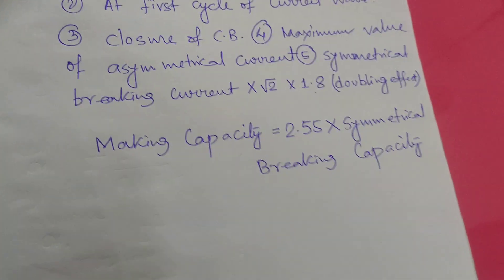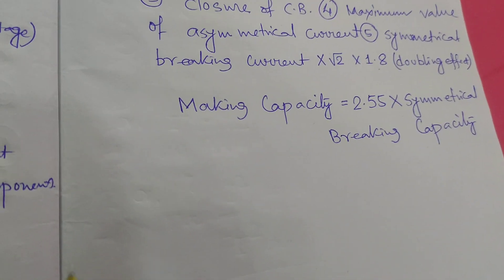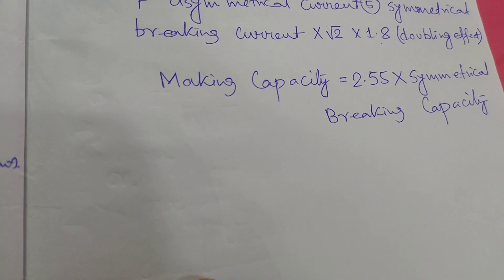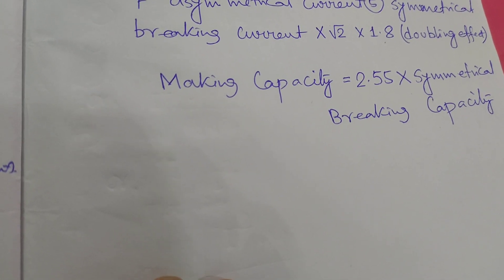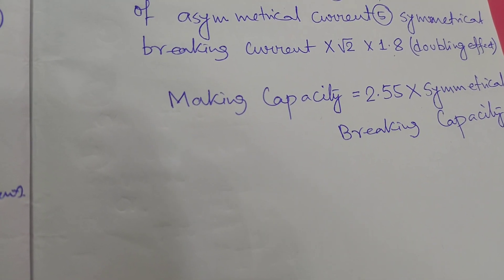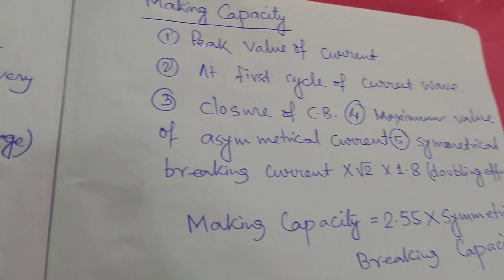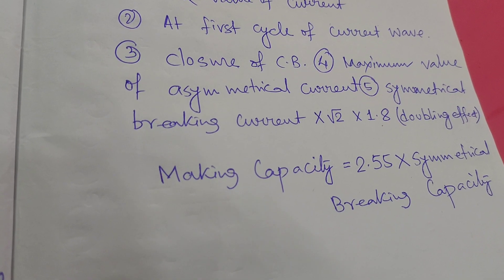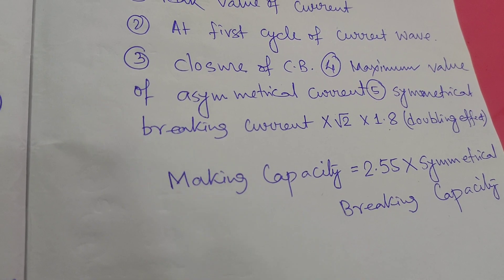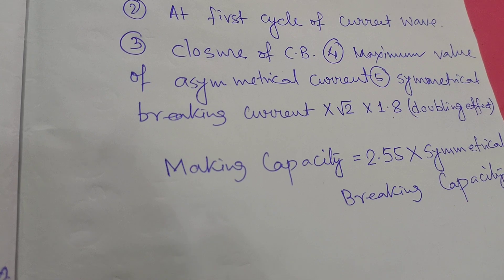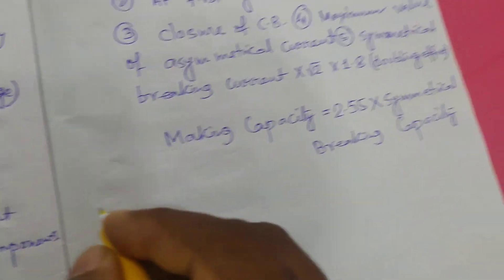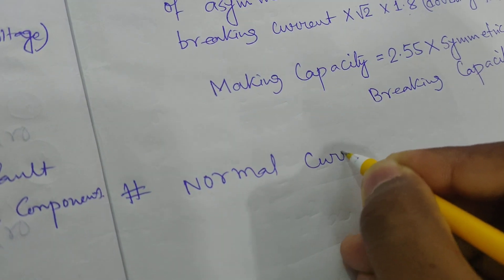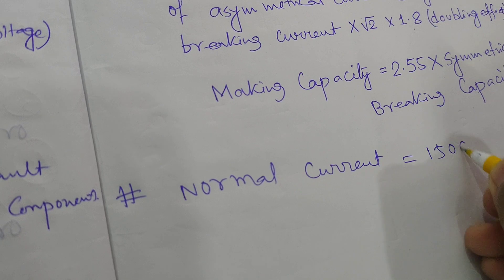For better understanding, let's do a problem related to breaking capacity and making capacity. A Circuit Breaker is rated as 1500 ampere, 1000 MVA, 33 kV, 3-second, 3-phase oil circuit breaker. Find: the rated normal current, breaking capacity, rated symmetrical breaking current, rated making current, short time rating, and rated service voltage. Rated normal current = 1500 ampere.